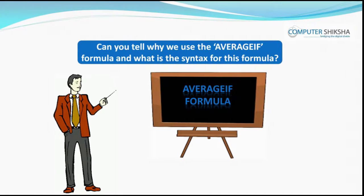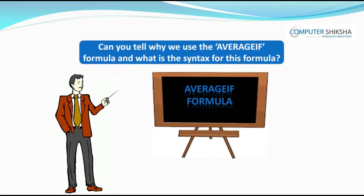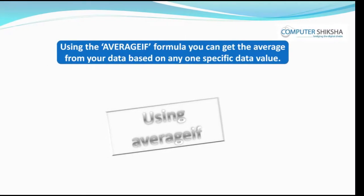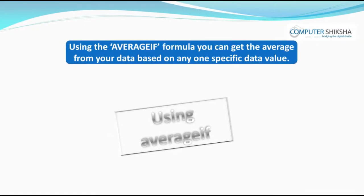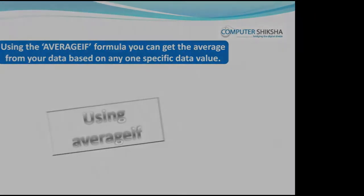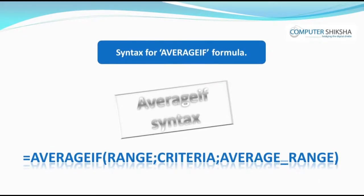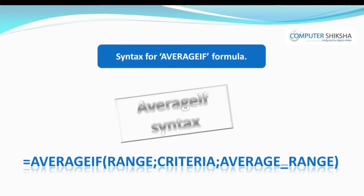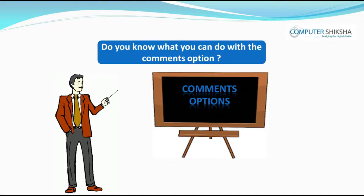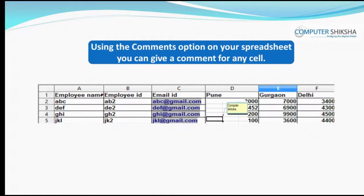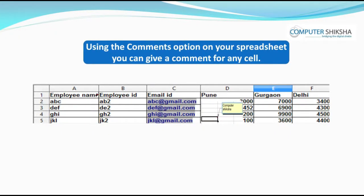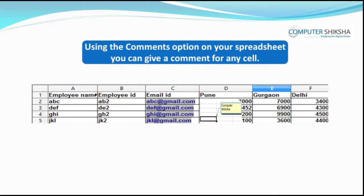Can you tell why is the AVERAGE IF formula used and what is the syntax for this formula? Using the AVERAGE IF formula, you can get the average from your data based on any one specific data value. The formula is: equal to AVERAGEIF, bracket, range semicolon criteria semicolon average range, close bracket. Using the COMMENTS option on your spreadsheet, you can give a comment for any cell, which will be shown in the spreadsheet page margin.